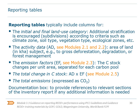The activity data, or AD, refers to the area of land in kilohectares — 1,000 hectares — subject, for example, to a given activity like gross deforestation, degradation, or forest management. The emission factor, EF, expresses the value of carbon stock changes per unit of area — so the amount of carbon stock gained or lost per unit of area, for example, deforestation — and this is separated for each carbon pool. The total change in carbon stock is estimated by multiplying the emission factor by activity data. And then there is a column with the total emissions expressed as CO2. There is also a documentation box, which is important to provide reference to relevant sections of the inventory report if any additional information is needed to understand correctly the numbers included in each section.